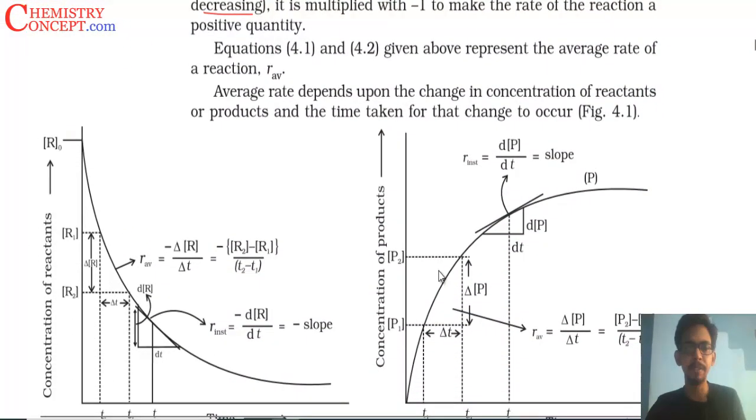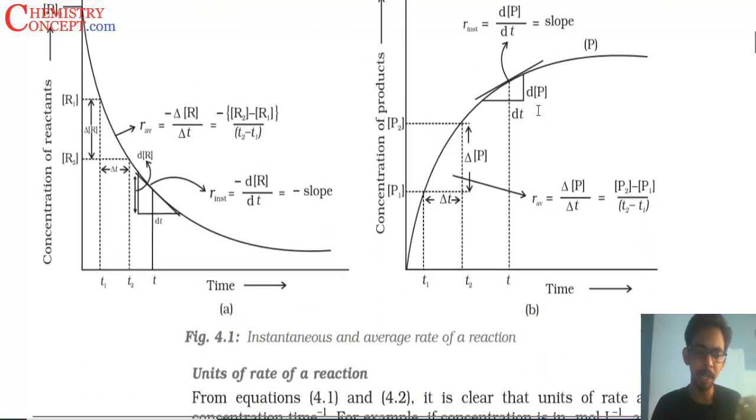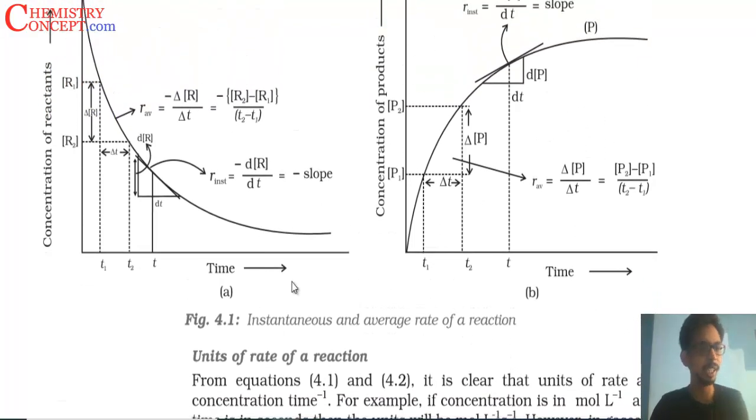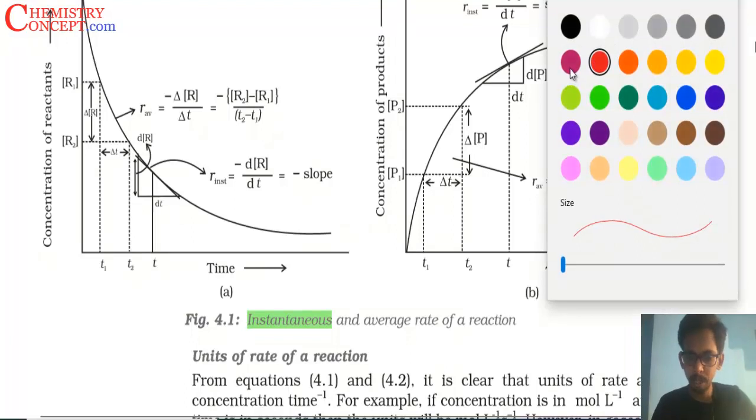So there are two types of rate: average rate and instantaneous rate. Average rate depends upon the change in concentration of reactants or products divided by the time taken. In the graphical method, the rate at a particular instant is called instantaneous rate. We draw a tangent and calculate it.